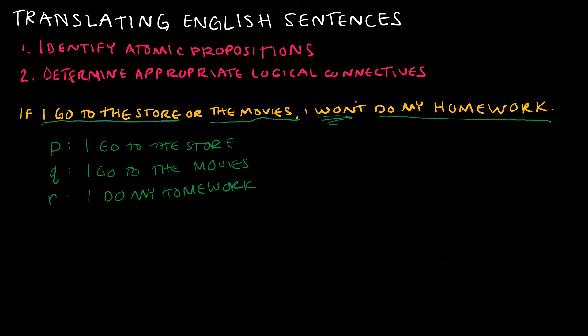Now that I've identified P, Q, and R, I want to identify any logical connectives. Remember, those connectives are negations, disjunctions, conjunctions, implications — the things we covered in our last couple of videos. What I see here is an if-then (there is no 'then' written but here is where it would go), an or, and a negation.